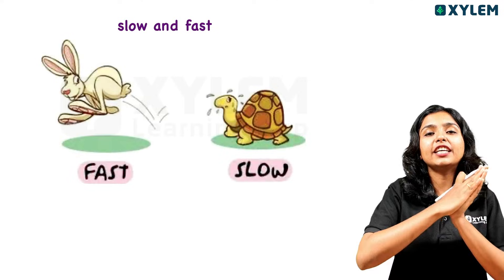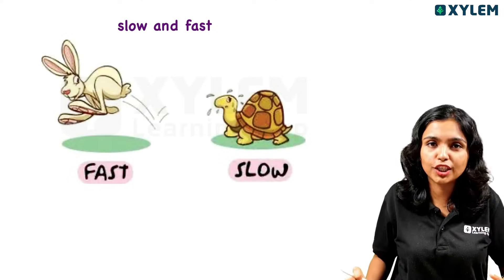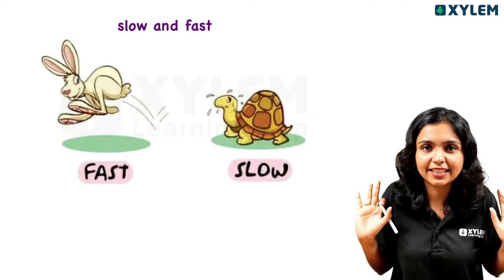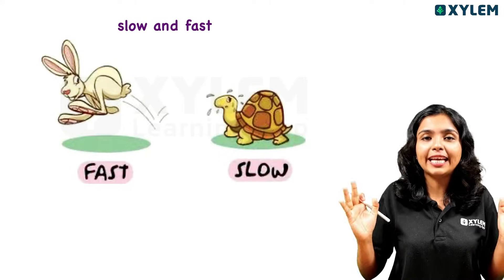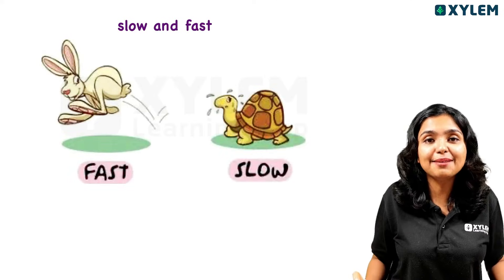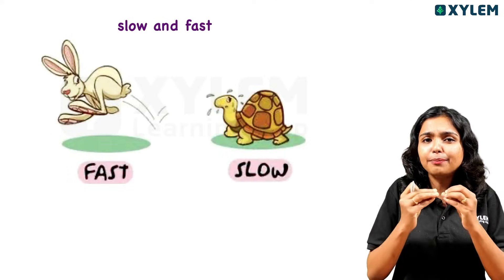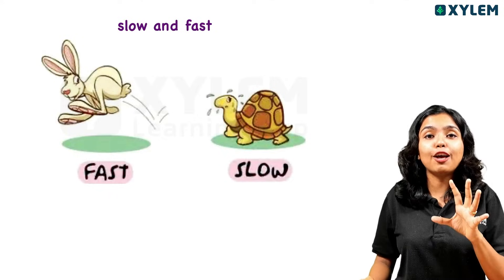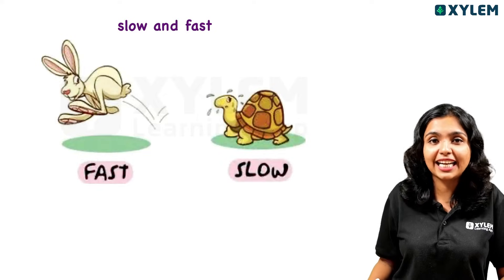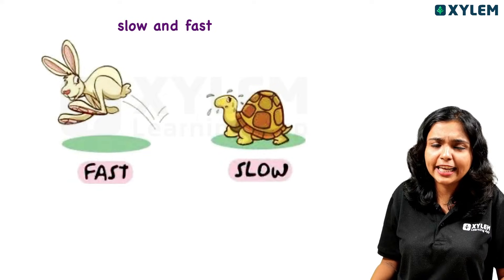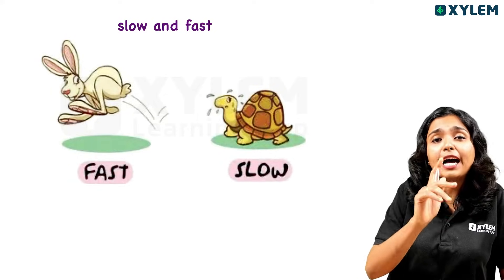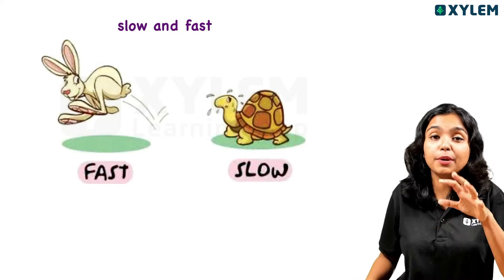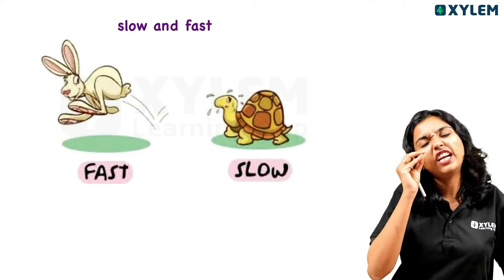Now we will discuss the types of motion — very slow and fast. When you start a cycle, you can vary the speed. How much time does it take? We said that it can be very fast and very slow.